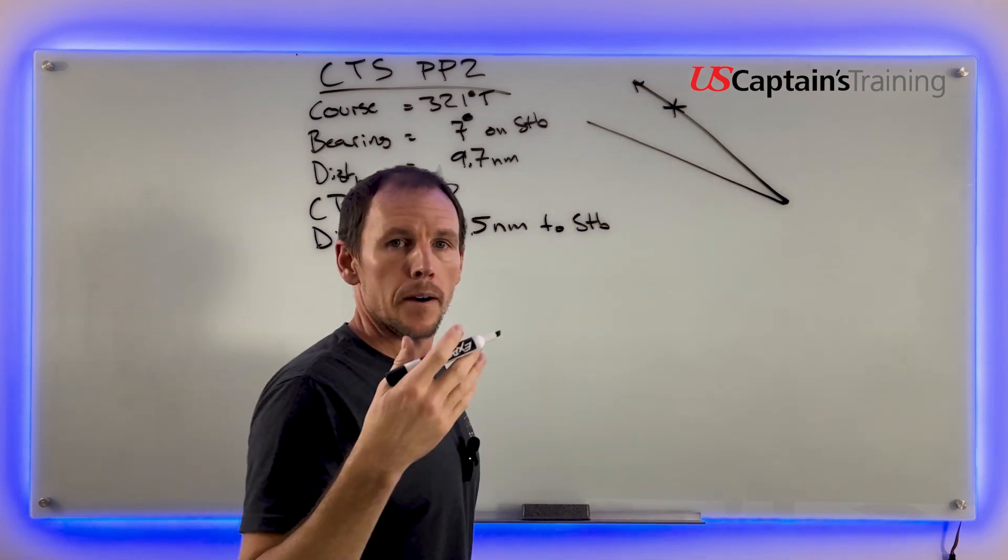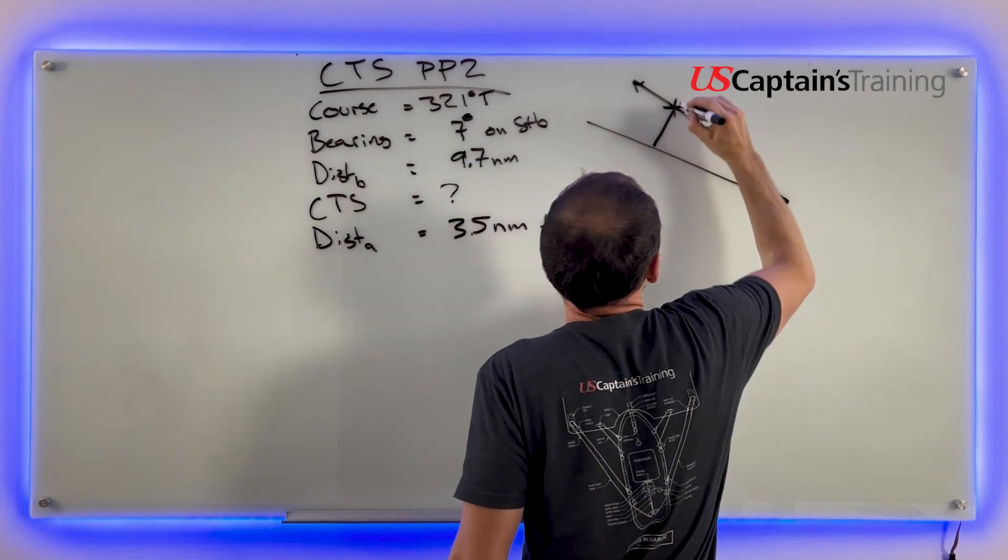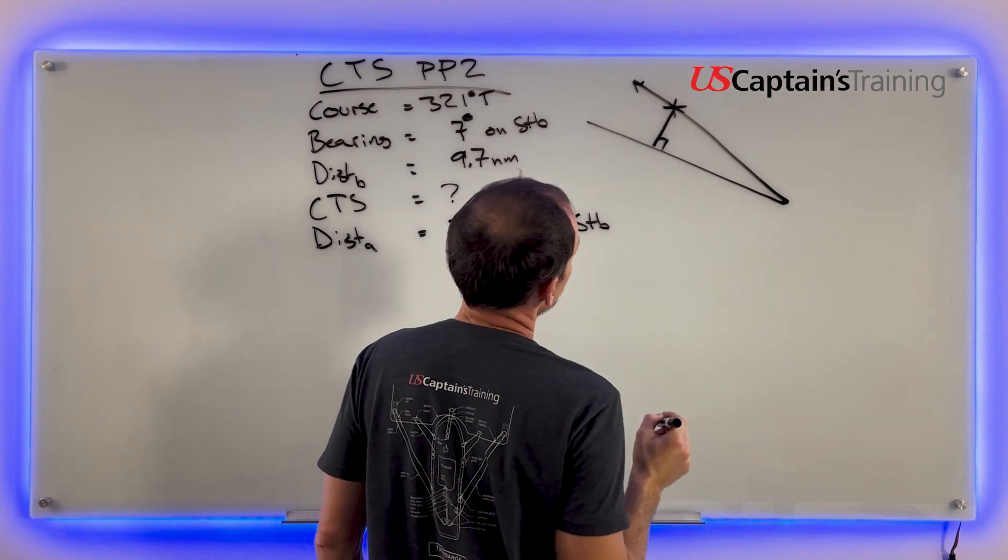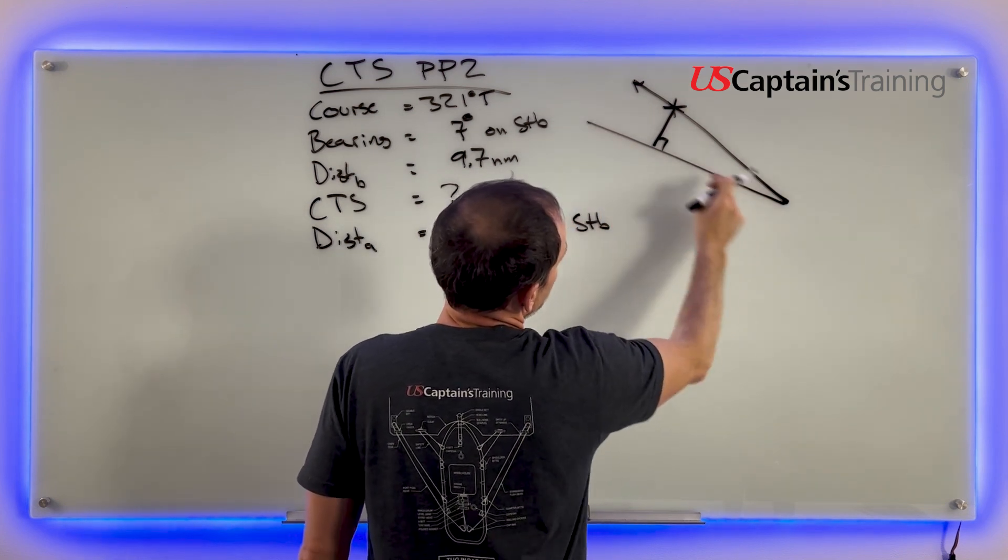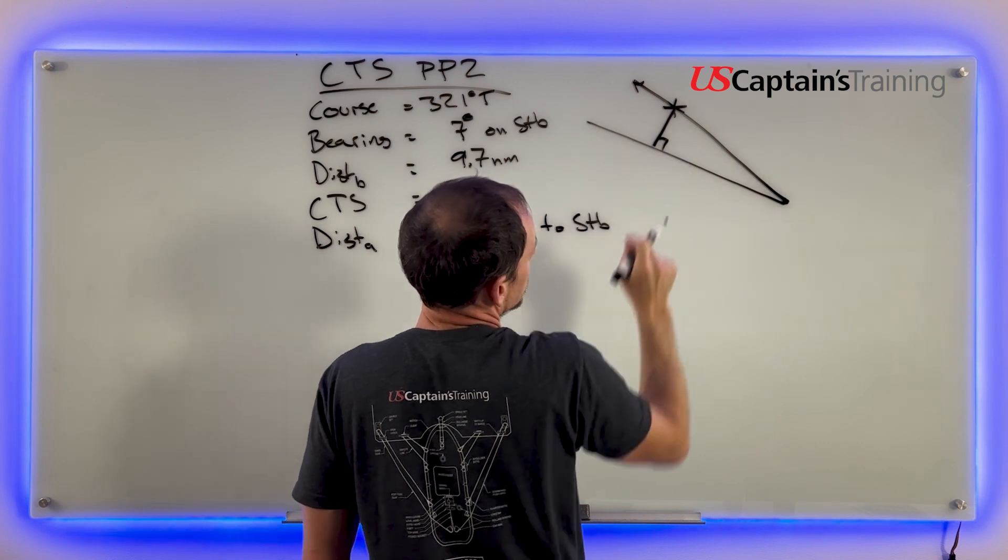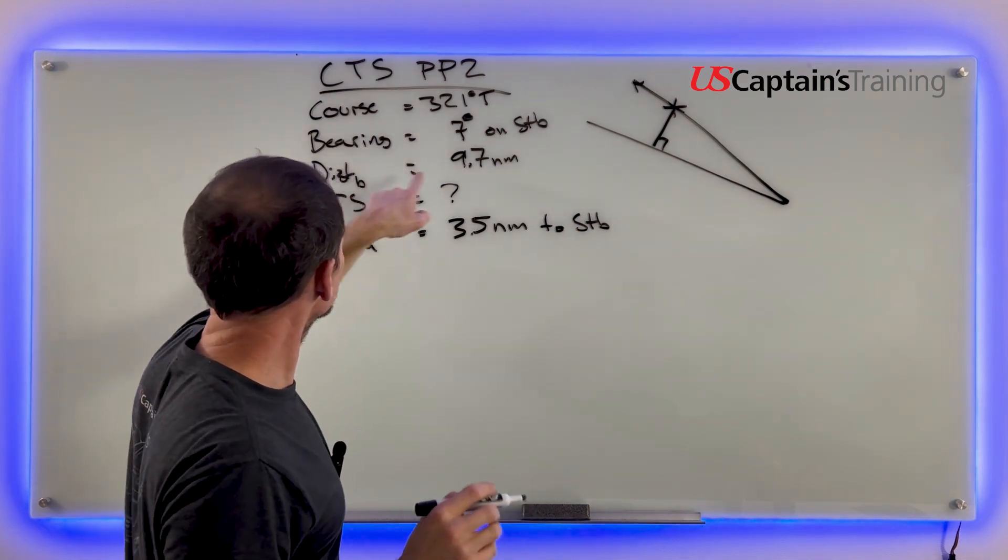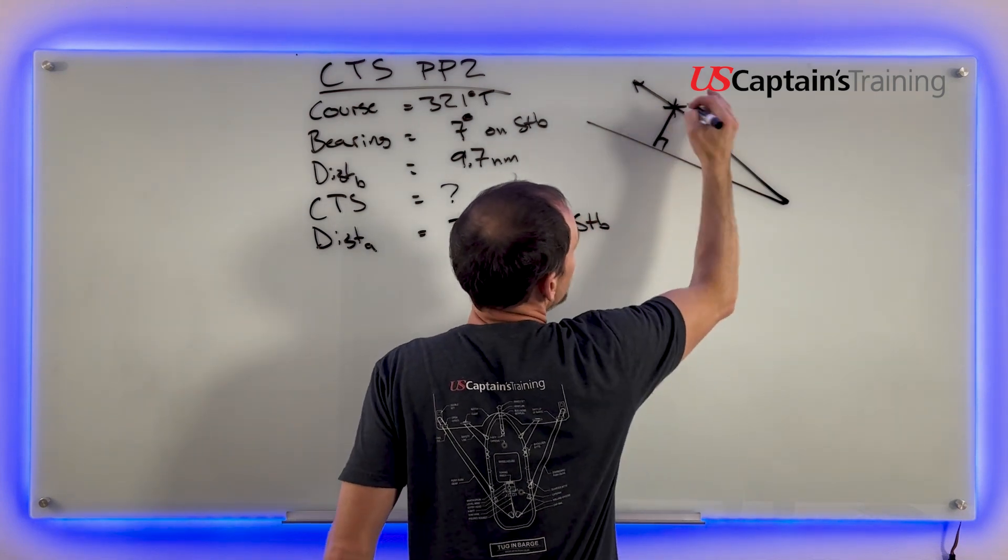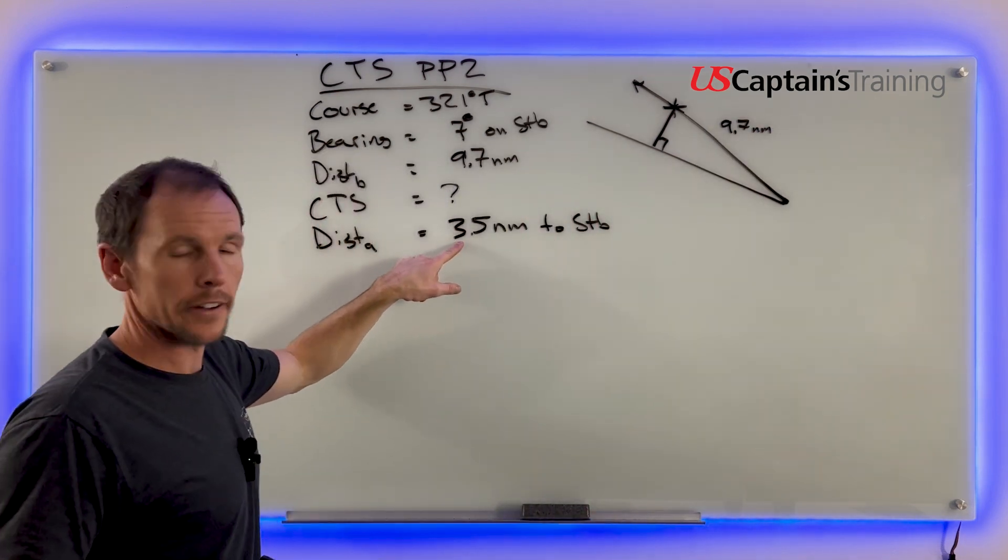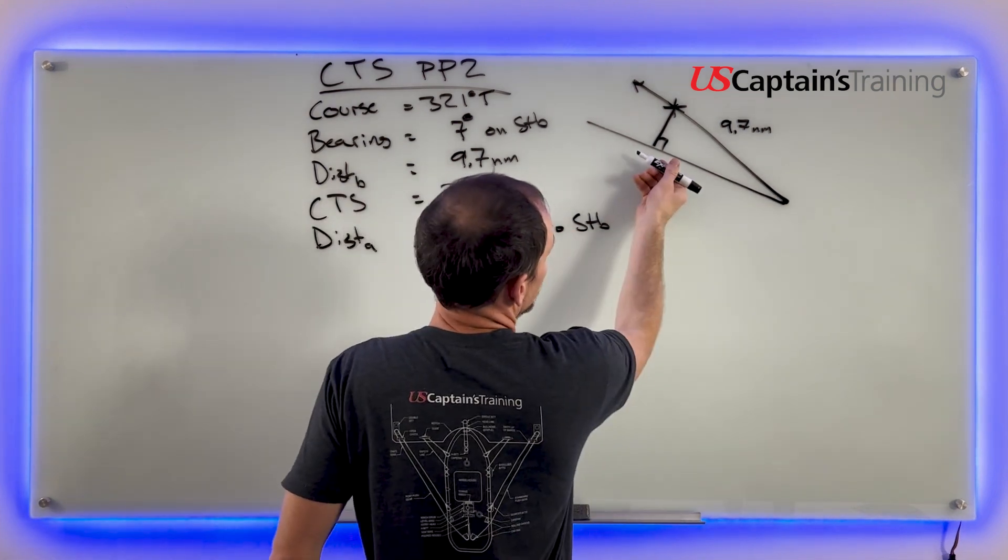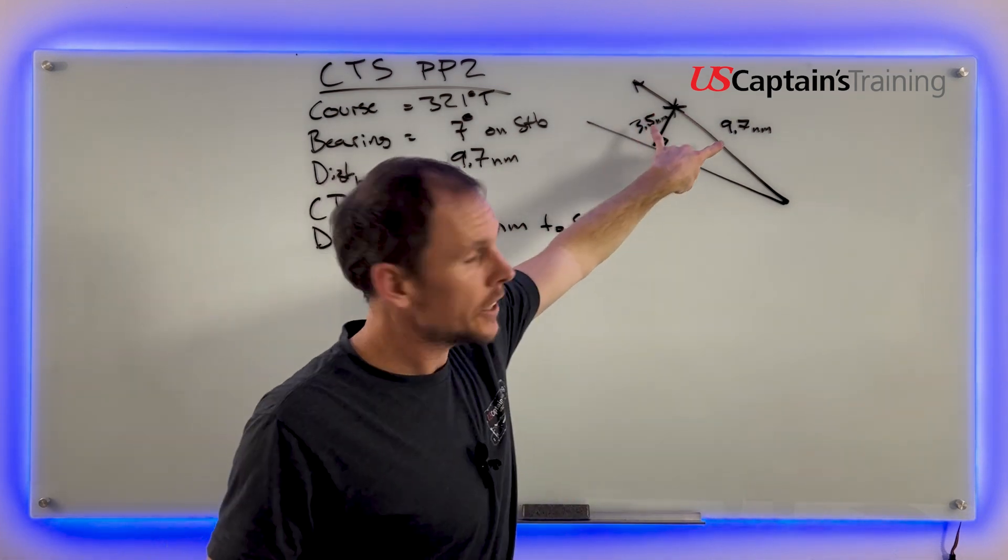We're going to be something like this. And now it said we leave it abeam, which means it's perpendicular, it's 90 degrees. So that means we have a right triangle. Here's our bearing with the light. Now we're going to be over here. Our intention is to be here and leave it starboard, which makes this 90 degrees. The bearing distance is 9.7, so from here to here is 9.7 nautical miles. And we want to leave it 3.5 nautical miles to starboard. This is going to be 3.5 nautical miles.